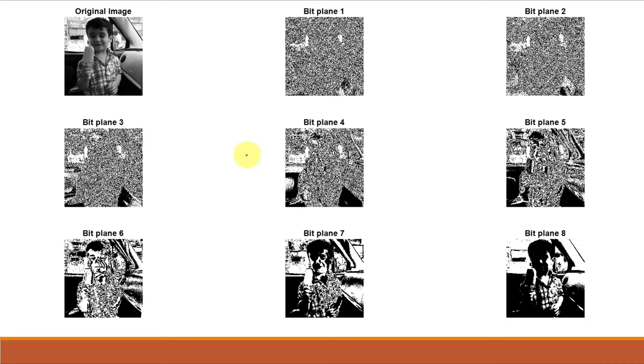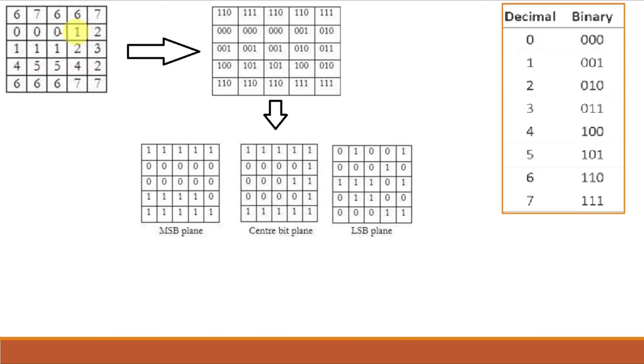So from this figure we can see that most of the information is contained from bit plane 5 to bit plane 8 and of course we can also include bit plane 4 for more clarity. This can be understood like this,